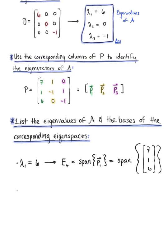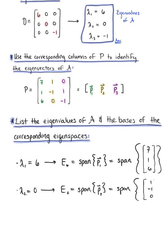Our second eigenvalue is λ₂ = 0, with the corresponding eigenspace E₀, defined as the span of the second eigenvector p₂. This is the span of the vector (1, −1, 0).